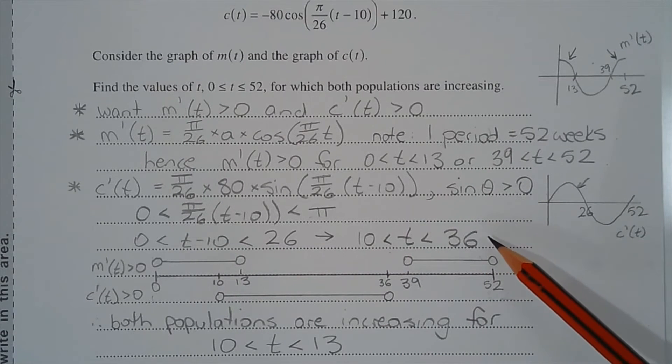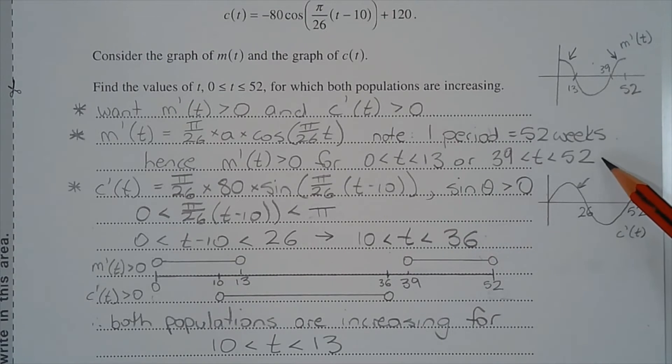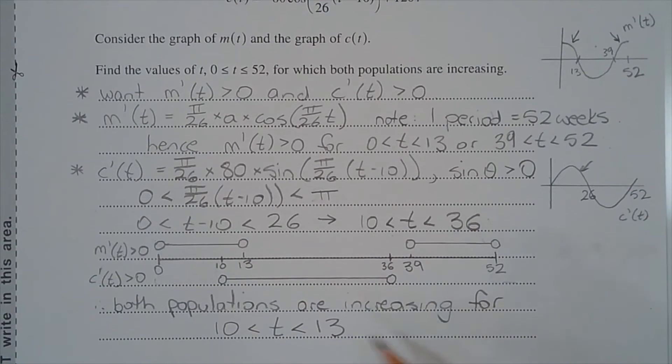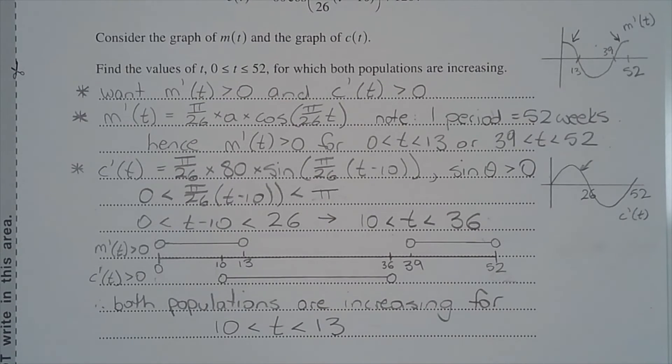And graphing both of these inequalities, so this inequality there and this inequality there, on a number line, we look for the part of the inequality that overlaps. So we can see that there's an overlap between m'(t) and c'(t) from 10 to 13 weeks. So therefore, both populations are increasing for t between 10 and 13 weeks.